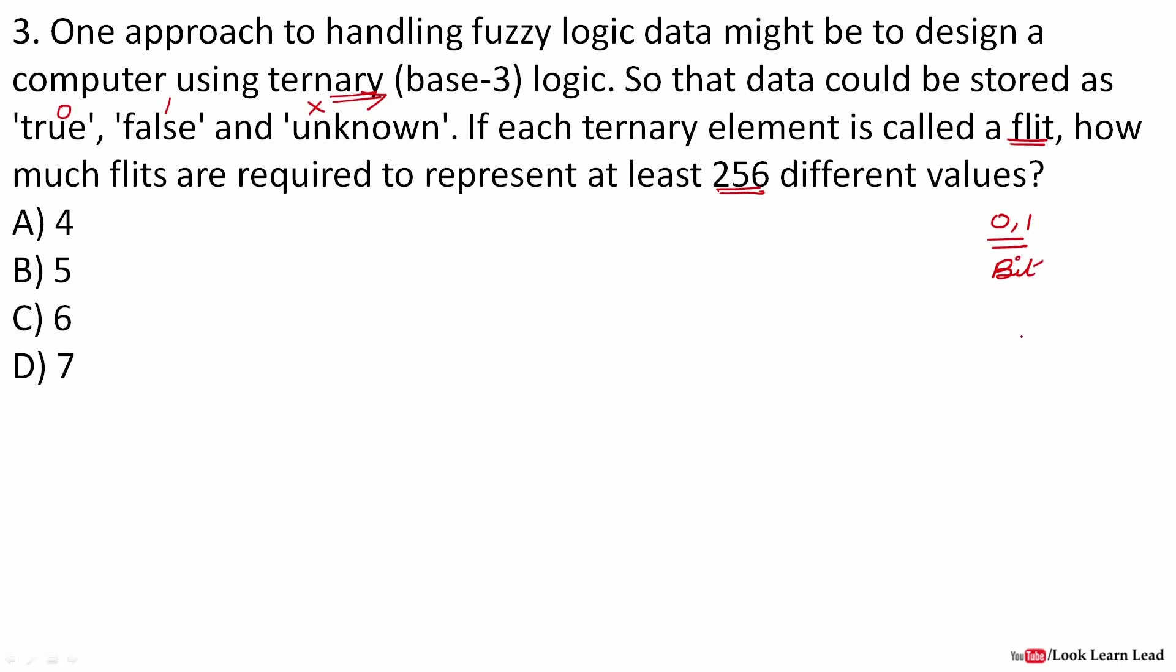For calculating the number of bits required, you calculate 2 to the power x where the value is 256 and you calculate the value of x. But now we are talking about flit, so there are three values: zero, one, and unknown. So we would be calculating 3 to the power x so that it is greater than or equal to 256. If we calculate 3 to the power 5 it would be 243, which is less than 256. 3 to the power 6 is 729. So 256 lies between 243 and 729, meaning we would be using 6 flits.